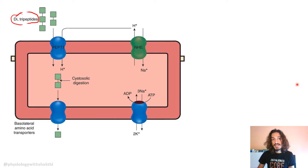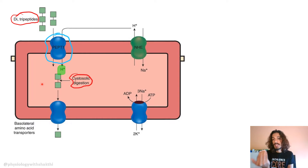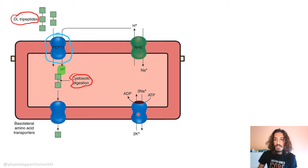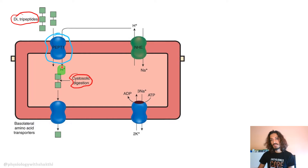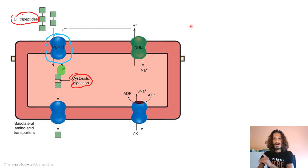The PEPT1 transporter works differently from the sodium co-transporter — it co-transports with H+ (protons). The sodium-potassium ATPase sets up the required gradients, and through a sodium-hydrogen exchanger, sodium comes in and H+ goes out. This creates a higher H+ concentration outside, driving an influx of H+ along with di- and tripeptides through the PEPT1 transporter.